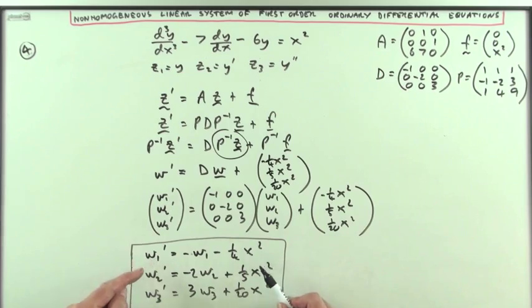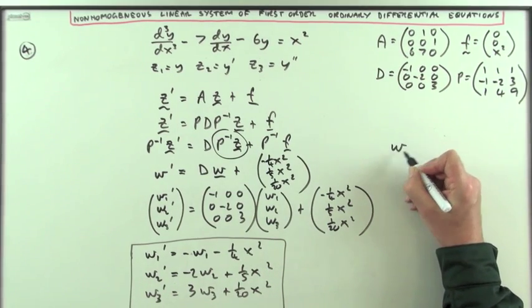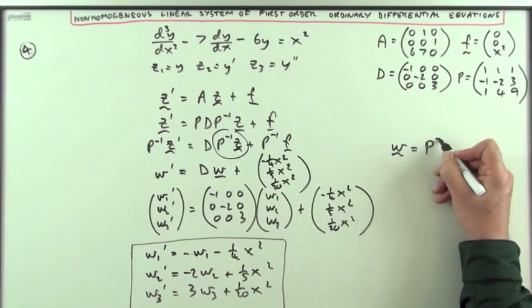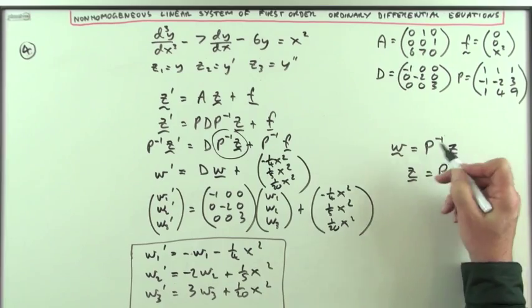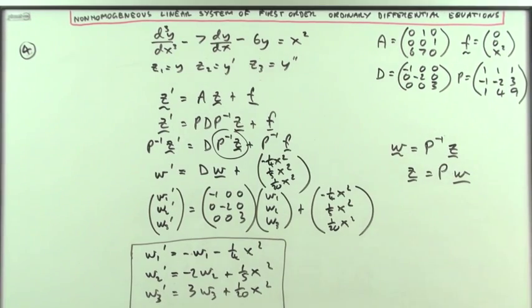And once you know what w1, w2 and w3 are, then from the substitution you used, which was w equals the inverse of P times z, you can reconstruct z from P times w, without any need for the inverse of P. So the next step is going to be, what are the solutions to these three linear ODE's? That's the next video.